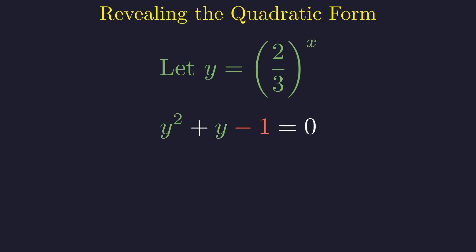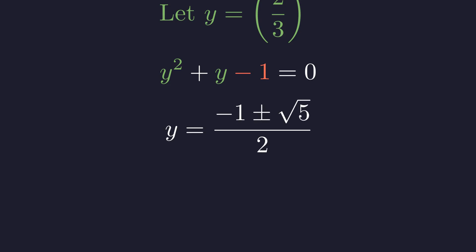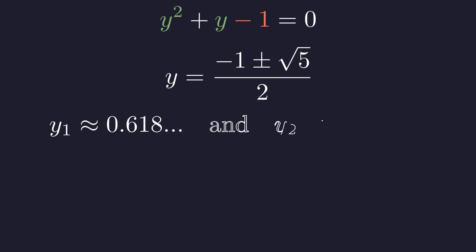Using the quadratic formula for y squared plus y minus 1 equals 0, we can directly calculate the solutions. Applying the quadratic formula gives us y equals negative 1 plus or minus the square root of 5, all divided by 2. These solutions evaluate to approximately 0.618 and negative 1.618. Let's analyze which one is valid for our original problem.